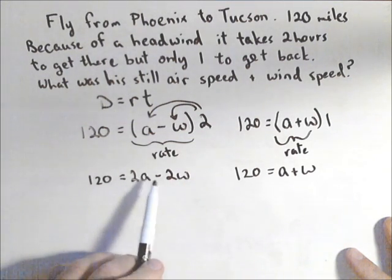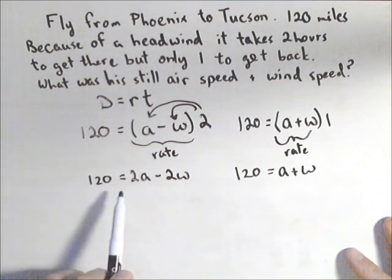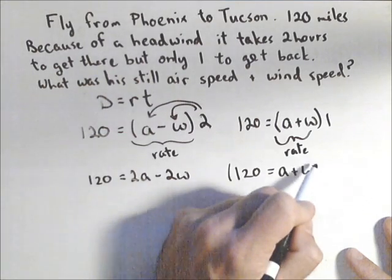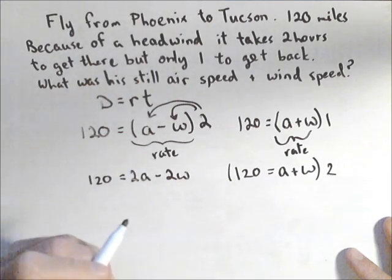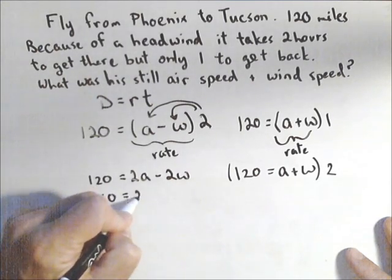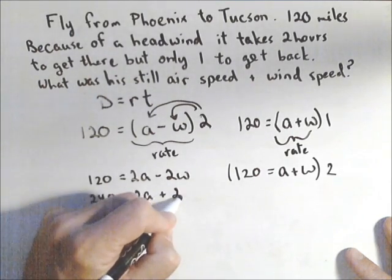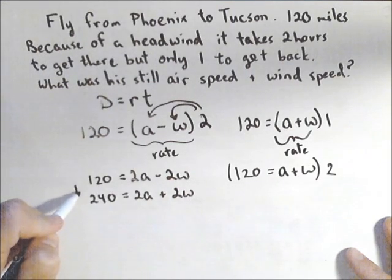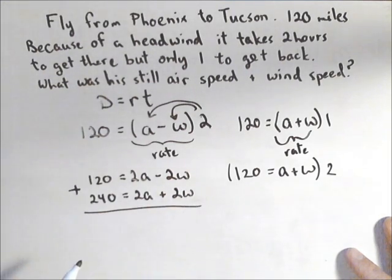I see that if I double my equation here, I'm going to be able to eliminate. So I'm going to double everything in this equation. So that's going to give me 240 equals 2A plus 2W. And I'll add my two equations together, so I'm going to do elimination.